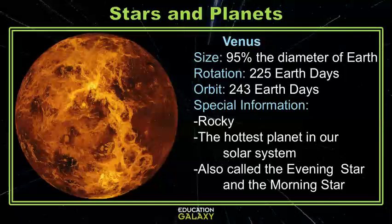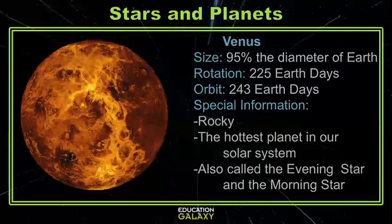Our next planet is Venus. Venus is the hottest planet in our solar system. It also has a rocky core, but a very thick atmosphere that keeps in all of the greenhouse gases. Venus is almost the same size of Earth and is also called the evening and the morning star. It's the brightest object in our sky, other than the sun and moon.